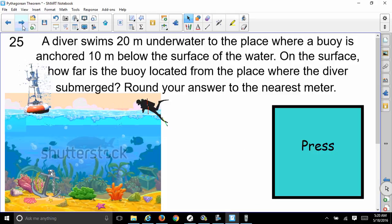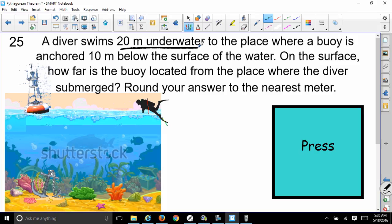So let's get into our word problem. Here's our first one. A diver swims 20 meters underwater to the place where a buoy is anchored 10 meters below the surface of the water. On the surface, how far is the buoy located from the place where the diver submerged? Round your answer to the nearest meter.